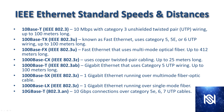1000 Base-T is Gigabit Ethernet that uses Cat 5e wiring up to 100 meters long. 1000 Base-SX is multimode fiber optic cable. 1000 Base-LX is single mode fiber. And then 10G Base-T is 10 Gigabit over Ethernet.